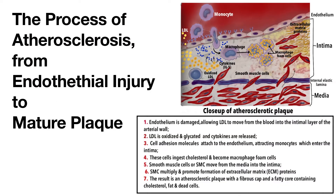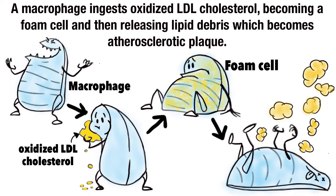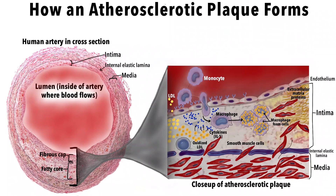Macrophages are immune cells in your blood that surround and ingest unwanted material in the body. In addition, the activated platelets and macrophages release small proteins, which allow smooth muscle cells and collagen to invade the intimal layer of the artery. Macrophages turn into foam cells as they ingest fat and cholesterol from those broken-down LDL particles.